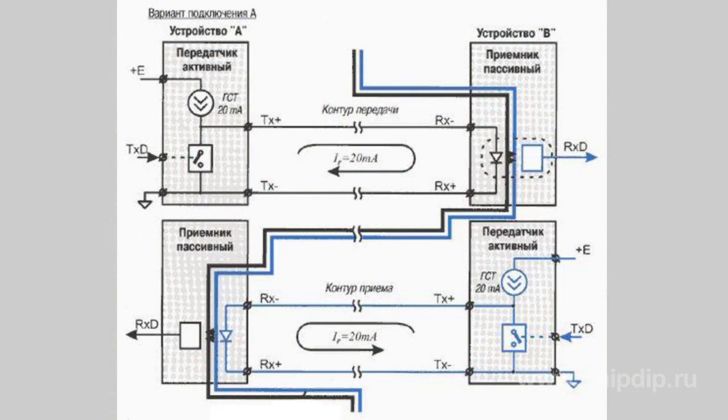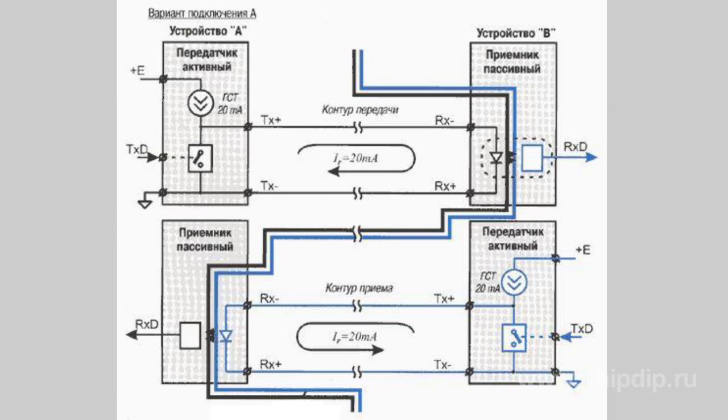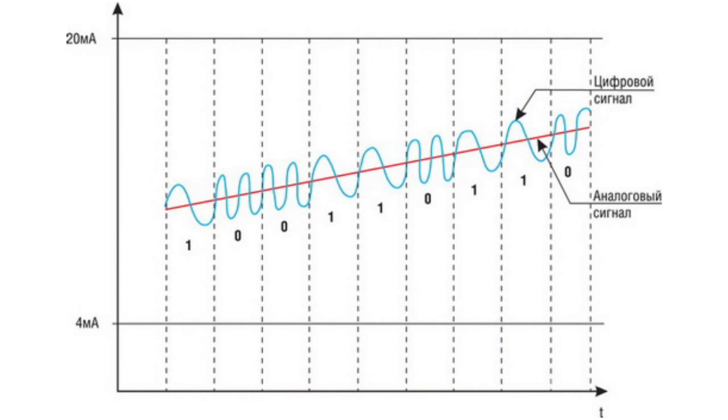You can connect in series other receivers, as the current source maintains the required current in all receivers simultaneously. One more feature is worth mentioning: digital data can be communicated over the analog current loop.